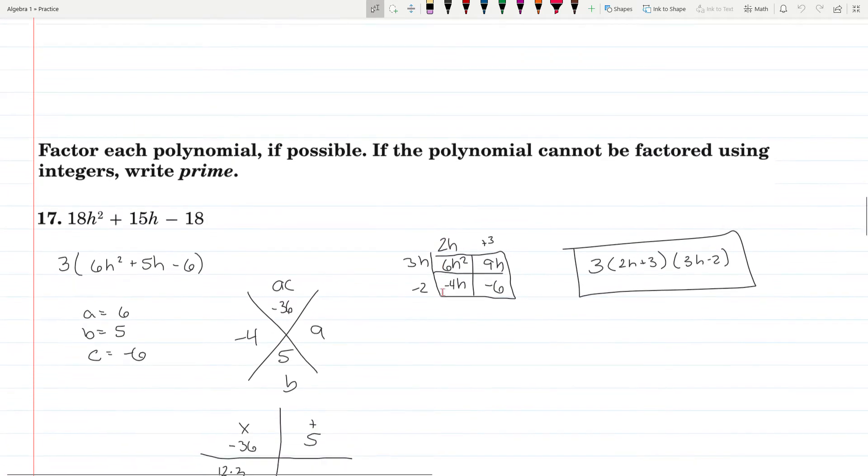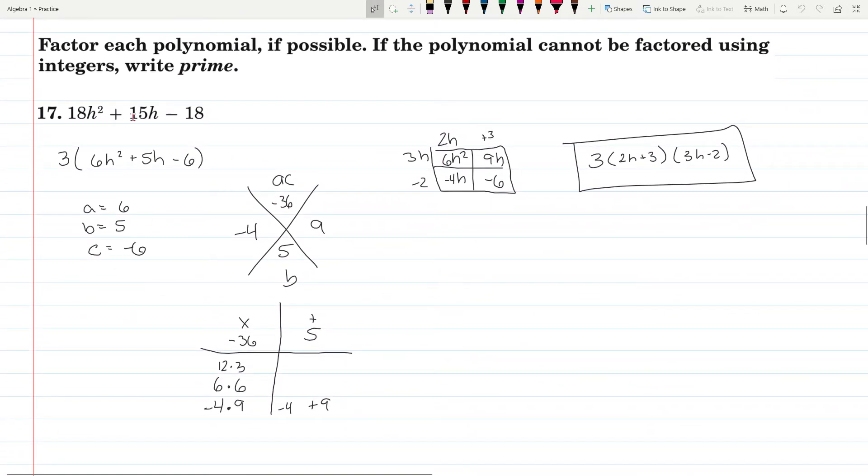Problem 17, very similarly, we can take out a 3 out of all of these. So divide the 3 out, you get 6h squared plus 5h minus 6 left. So A is 6, B is 5, C is negative 6. A times C is negative 36, B is 5.